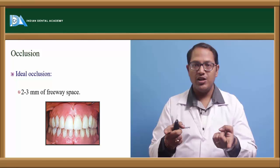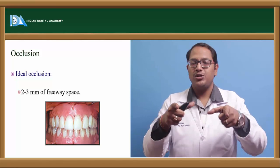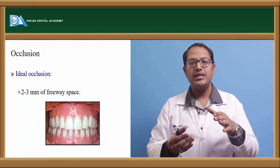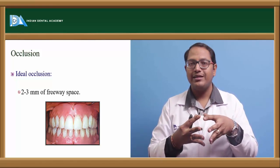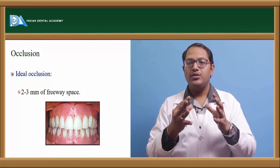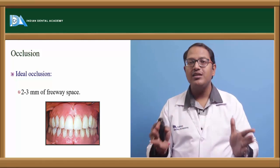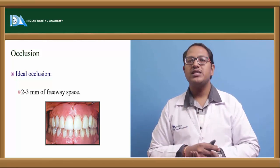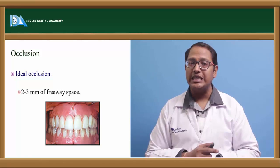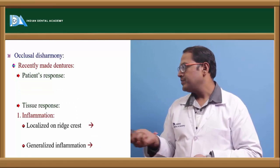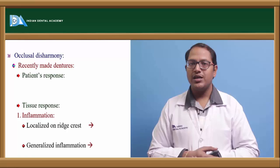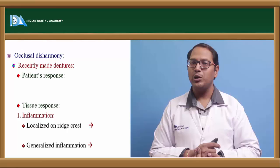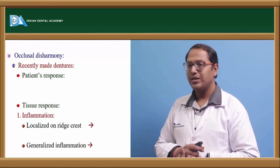Check that posterior extension is not over the retromolar area, as it is an inclined plane and constant muscle pull will dislodge the denture. For anterior extension, apply superiorly directed forces to check if the seal breaks — if the seal breaks it indicates good retention; if the denture simply comes out, corrections are needed. For occlusion: place two fingers in the buccal shelf area and ask the patient to close. The first feather-light contact should be evenly distributed across all teeth. If contact is specific to one tooth, perform selective grinding of only the non-functional cusps — buccal cusps in maxillary and lingual cusps in the lower arch.